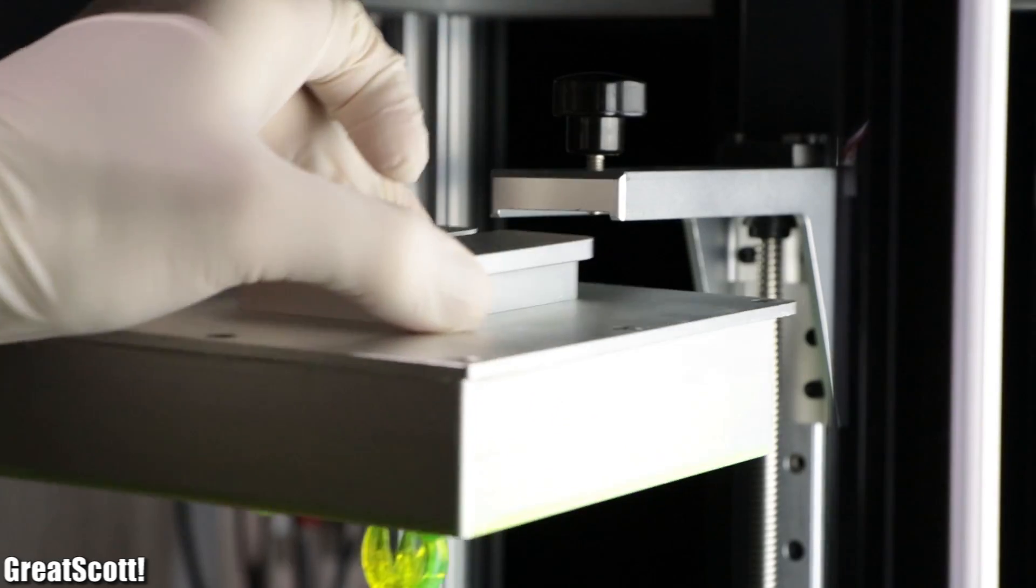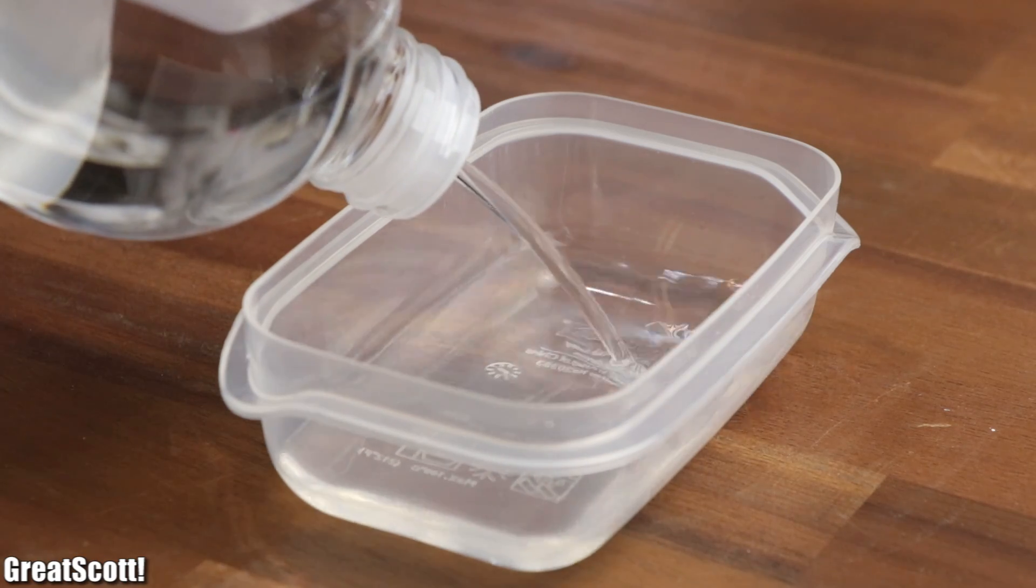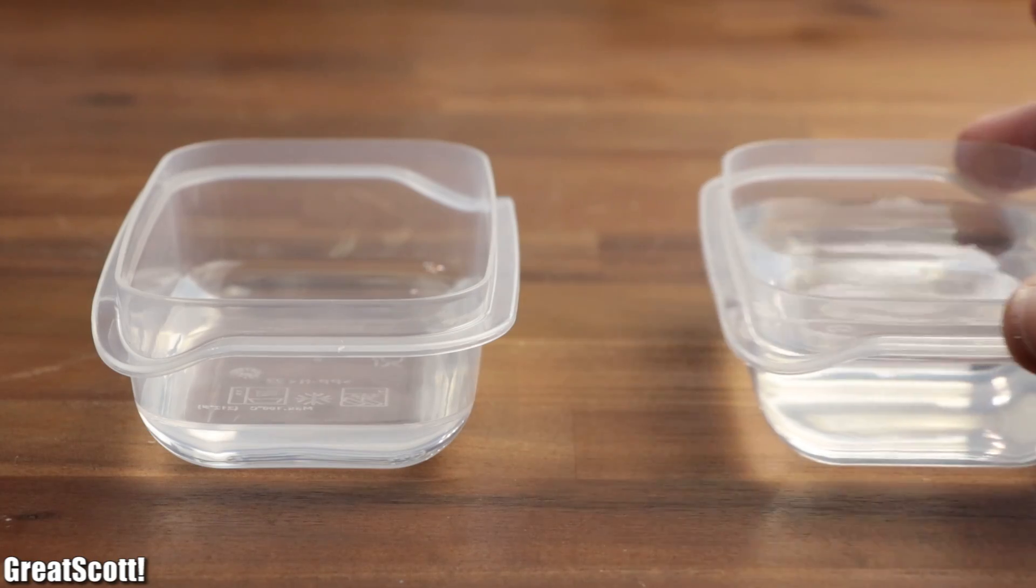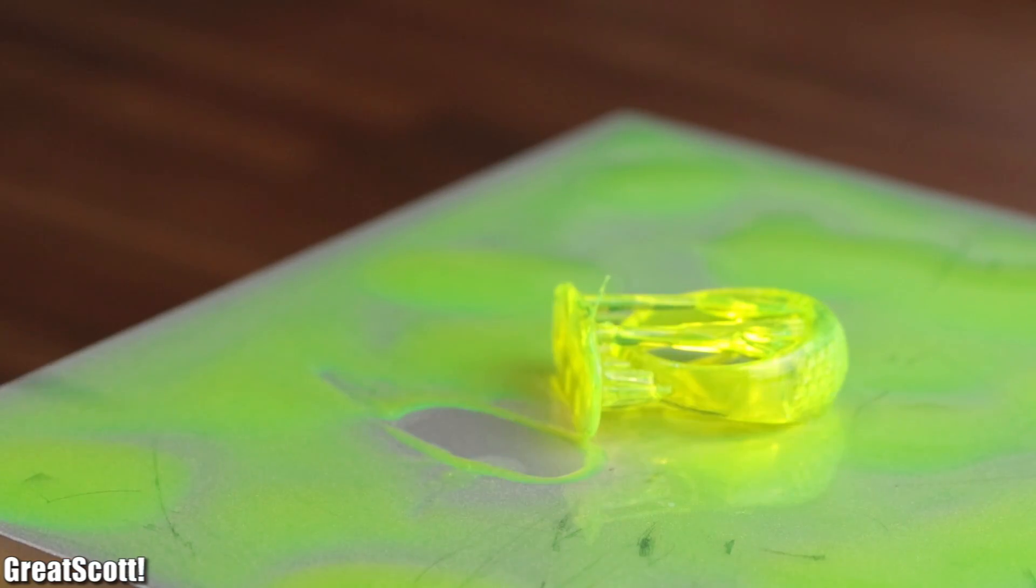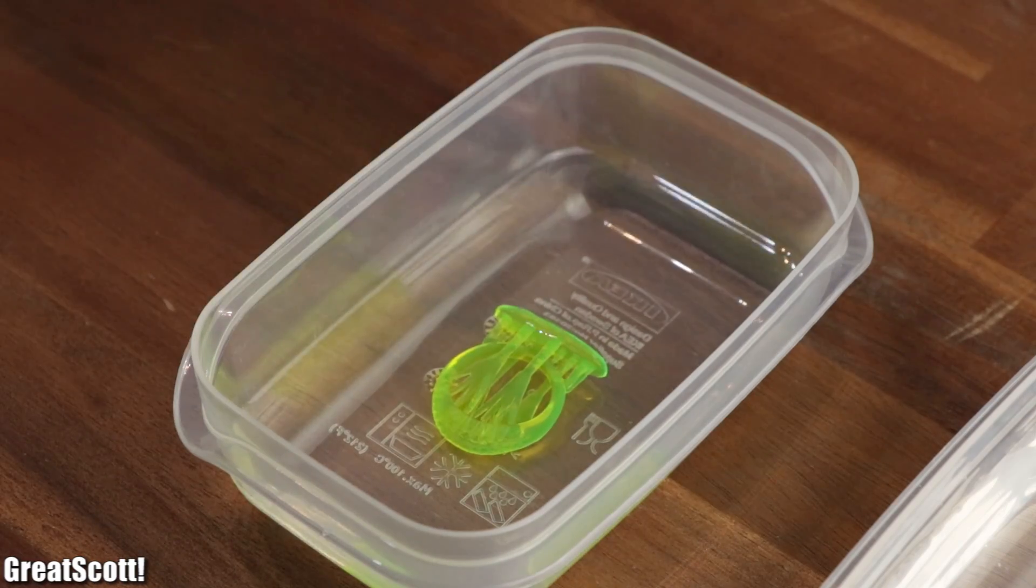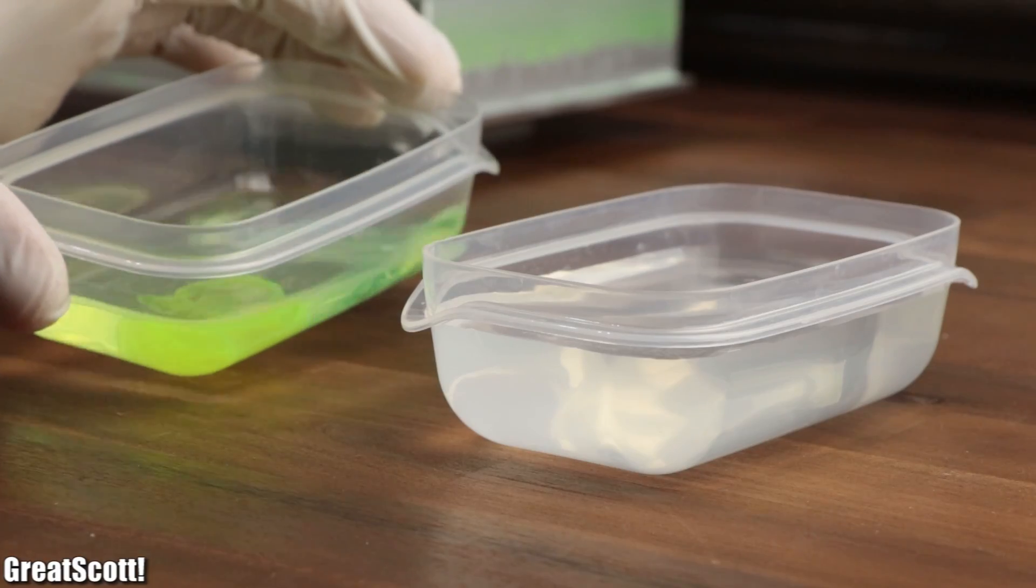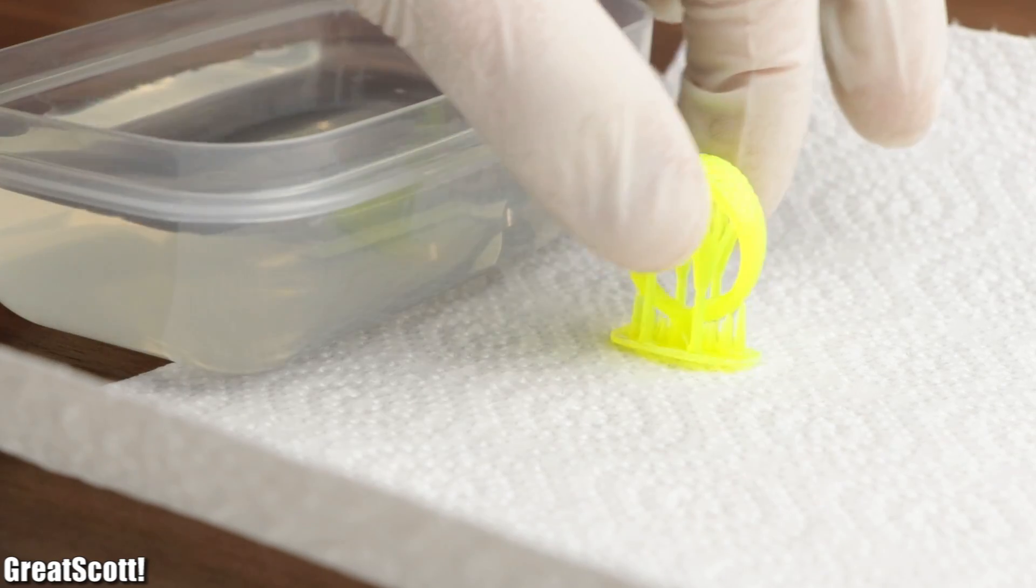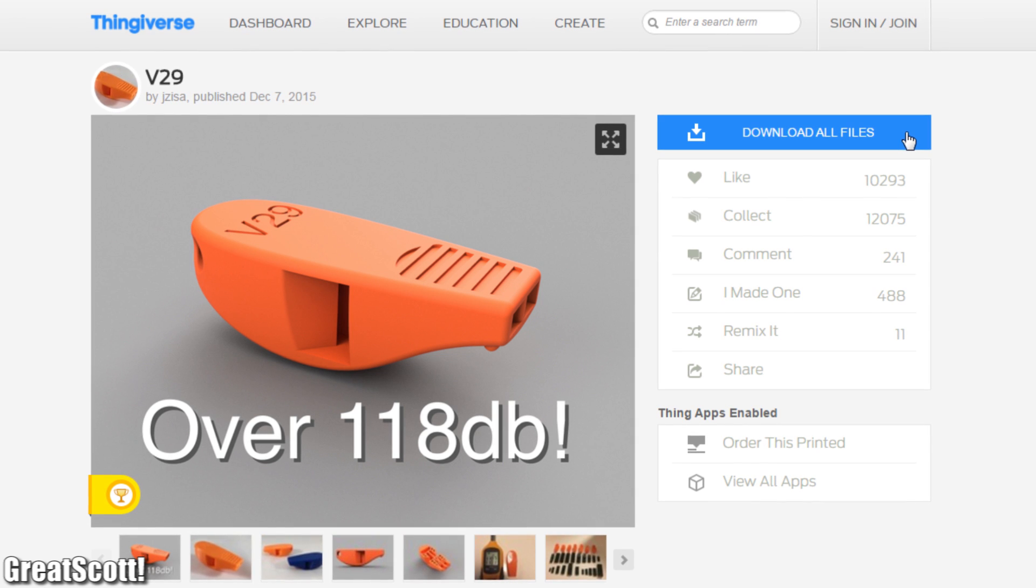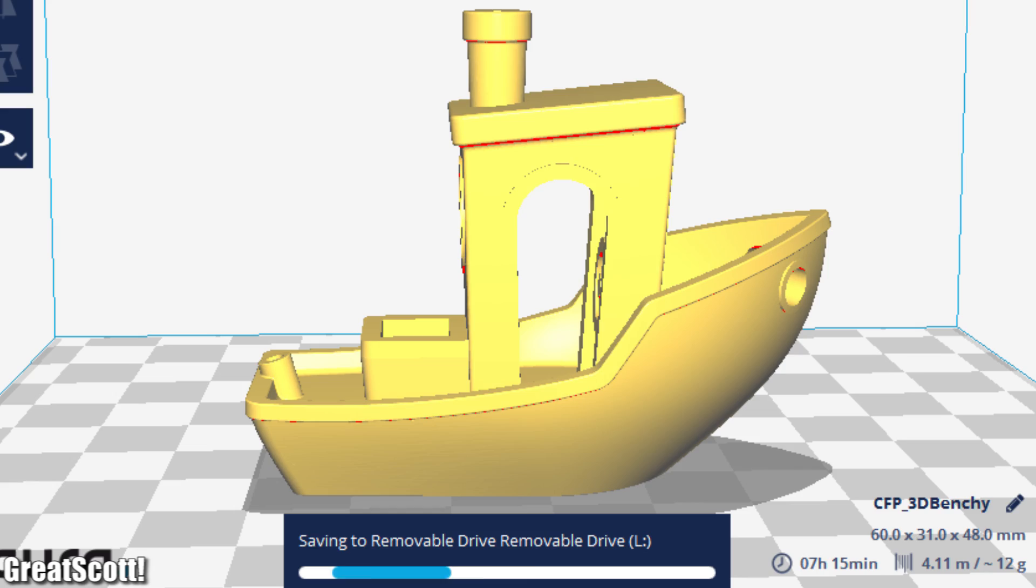To finalize the print though, I got myself isopropanol, which I filled into one small container and brought in another container with plain water. After removing the print from the build platform, I dropped it into the isopropanol, moved it around, cleaned it in the water, and repeated this process three times before letting the print dry and cure for a couple more hours. And while that was happening, I downloaded a model of a whistle and a boat from Thingiverse, sliced them and printed them as well without any problems.